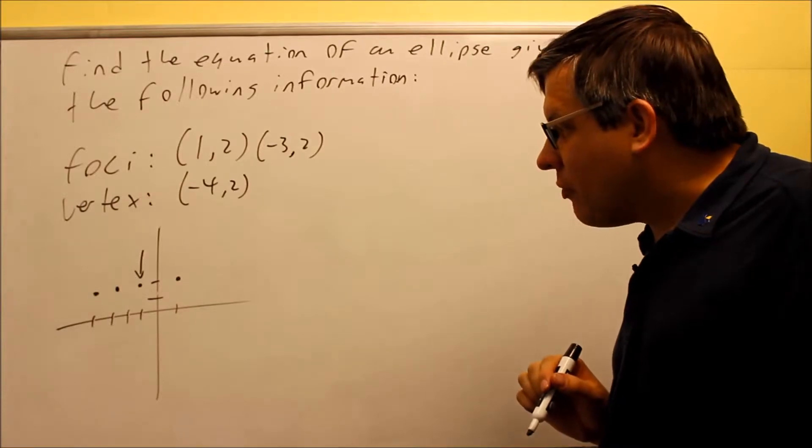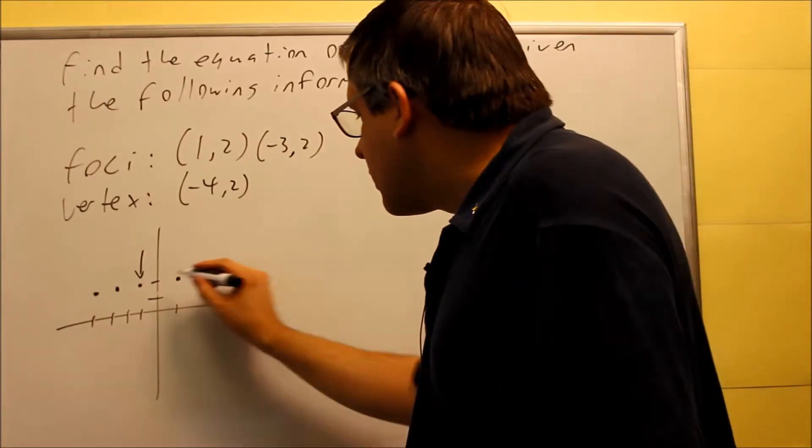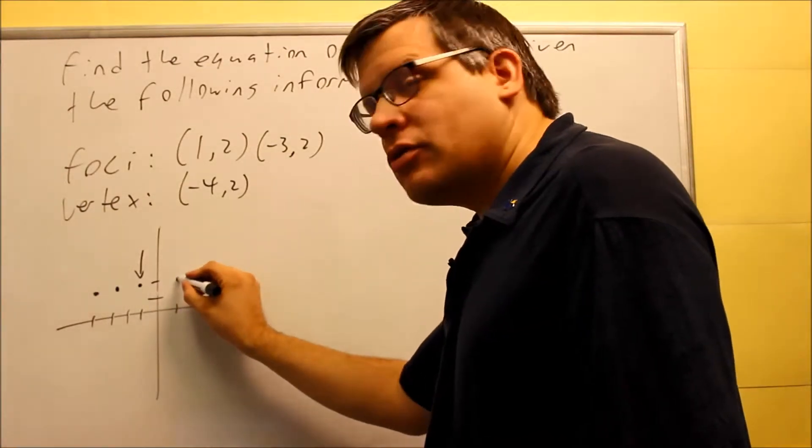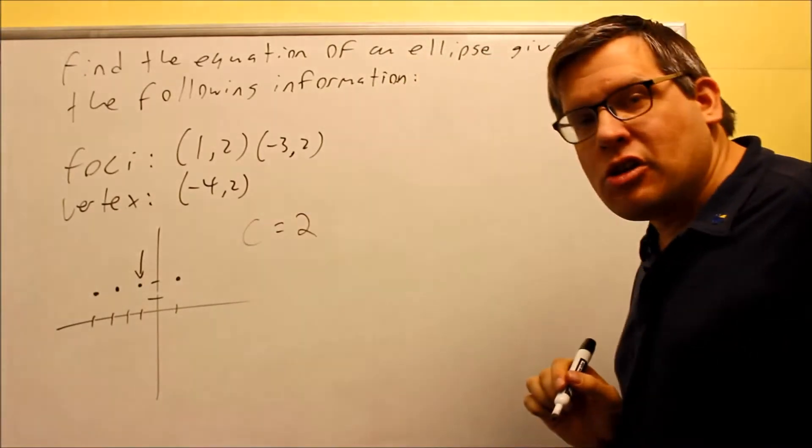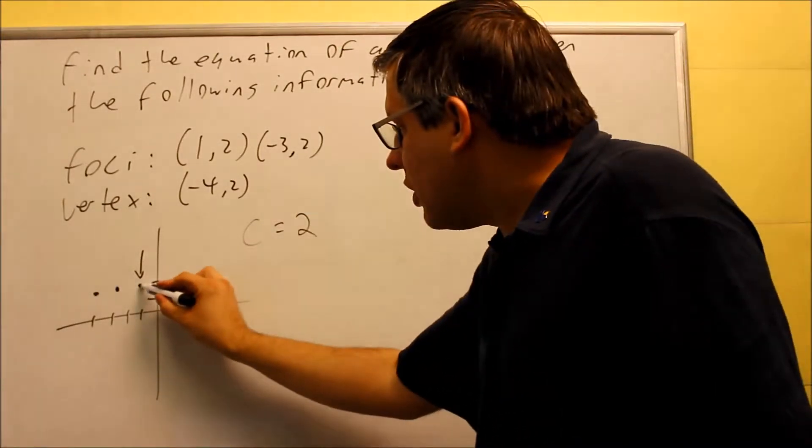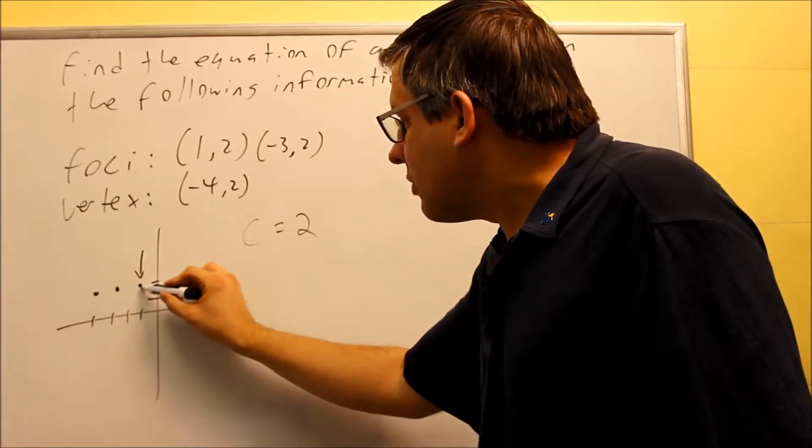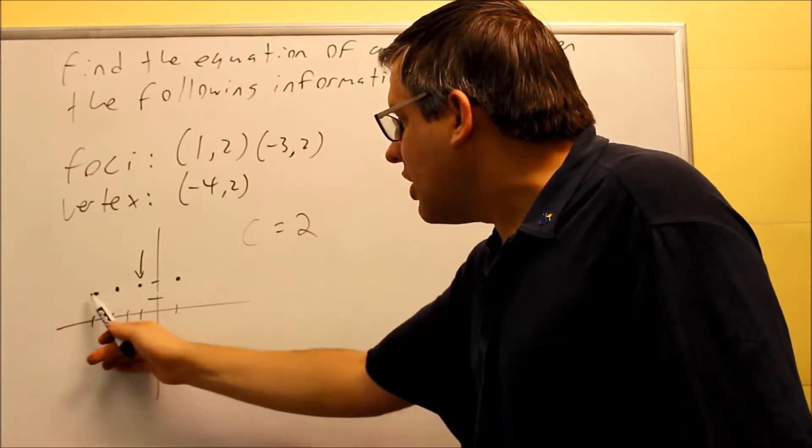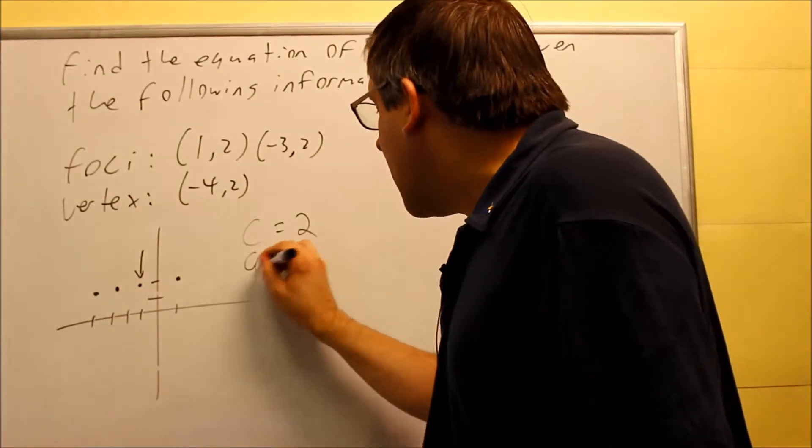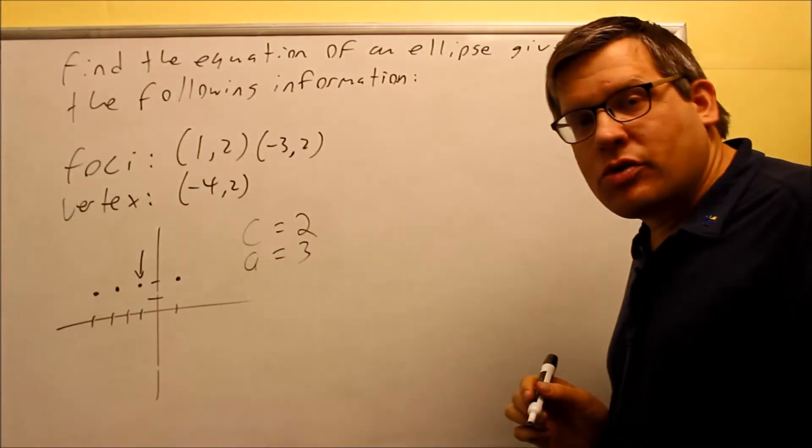Now from this piece of information, what I know is that the distance from here to the foci, that's my c value, my c value is going to equal 2. From here to here, from the center with the arrow to the end, that's 3. So now my a value is equal to 3.